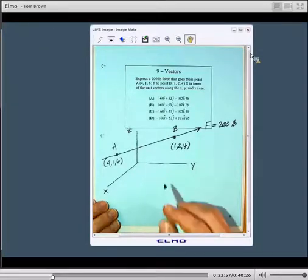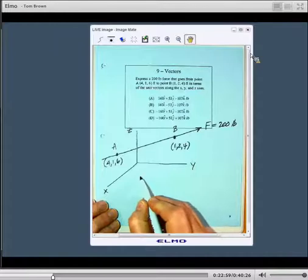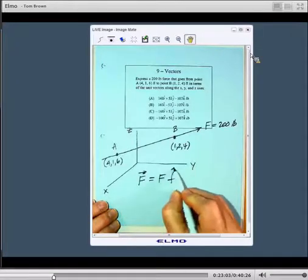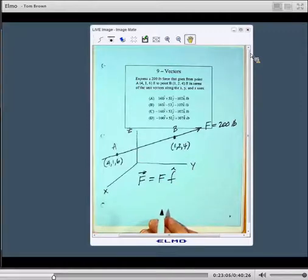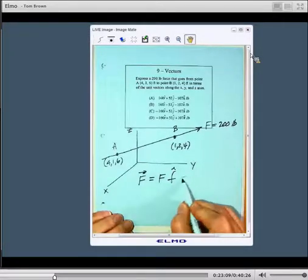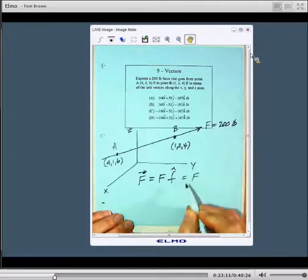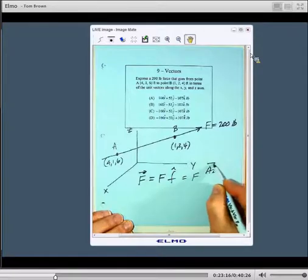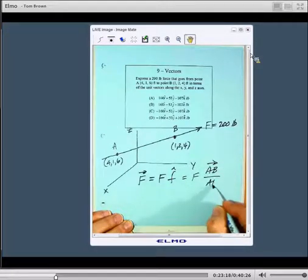What you have is the force F is equal to magnitude times unit vector along that direction. We have magnitude F, and what we have is our vector A to B divided by its magnitude.